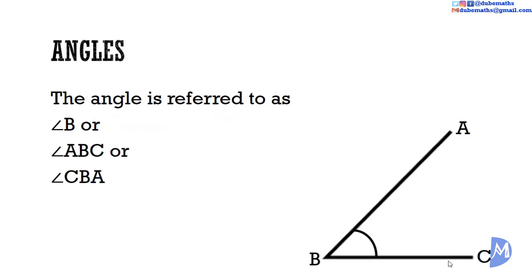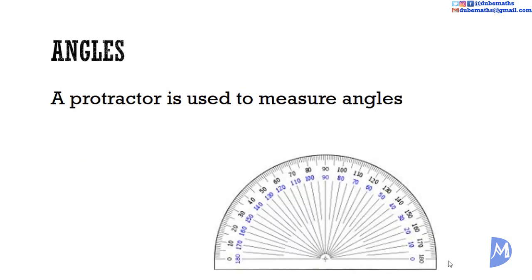The angle is referred to as angle B, which is the angle at point B, angle ABC, the angle formed by tracing from A to B to C, or angle CBA, which is the angle formed by tracing from point C to B to A. A protractor is used to measure angles.